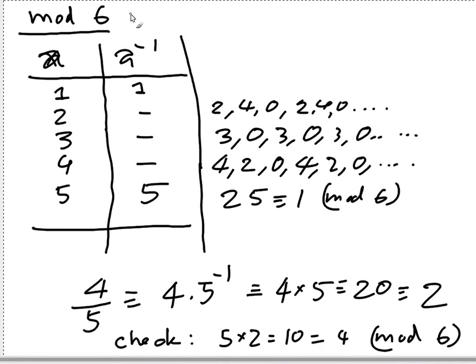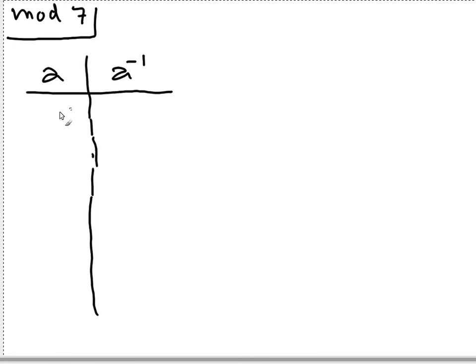So you can check 5 times 2, that's 10, that's 4 mod 6. So that's 4 modulo 6. Now let's look at the case with mod 7.